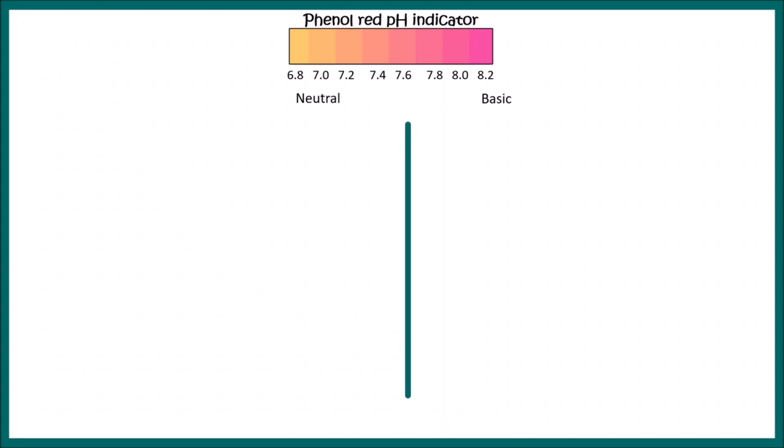But when the media turns basic and the pH rises, the color becomes reddish. That's what happens in Helicobacter pylori infection. In the test strip, when you see a red color, that means a positive result—the bacteria is present.